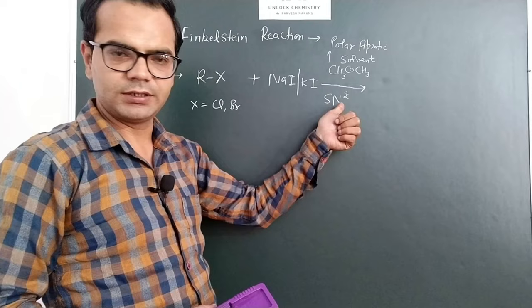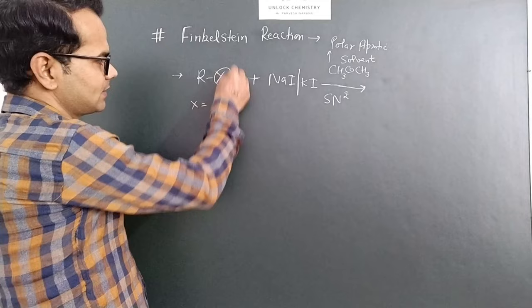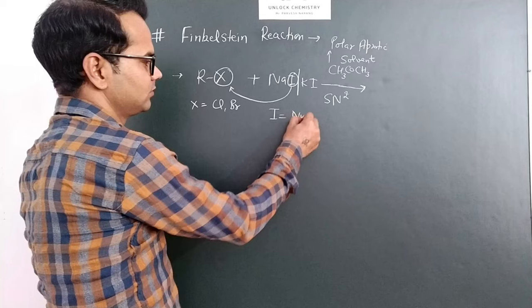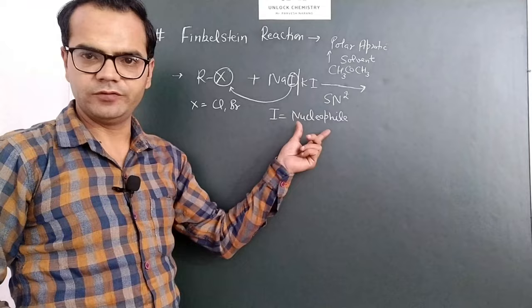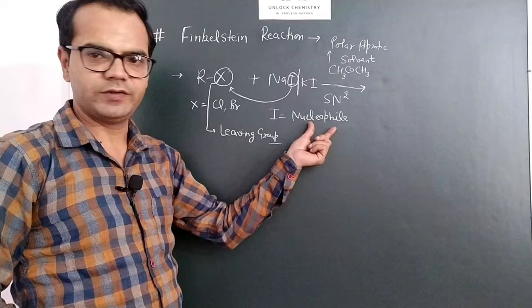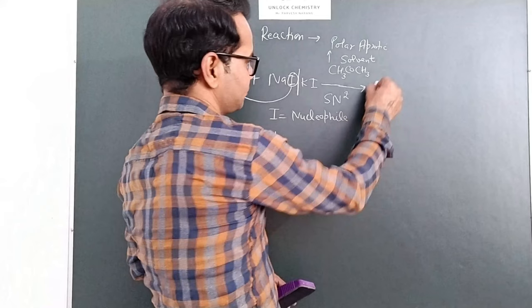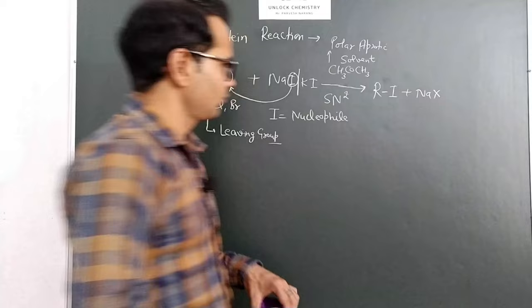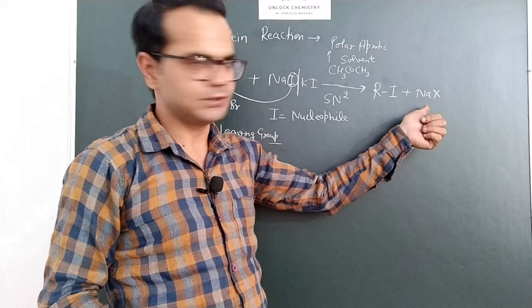So this is actually halogen exchange method. This X is replaced by this iodine. I here is nucleophile and this X is a leaving group. So this nucleophile will displace this leaving group. As a result, alkyl iodide is formed and sodium halide is precipitated out.